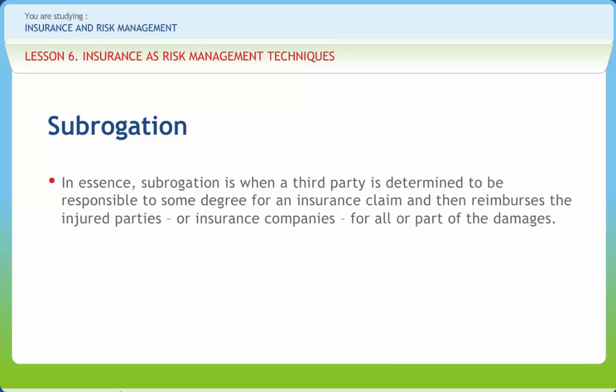In a sense, subrogation is when a third party is determined to be responsible to some degree for an insurance claim and then reimburses the injured parties or insurance companies for all or part of the damages. In many areas of insurance, the degree of specialization needed to pursue subrogation can vary by situation and circumstances. There are some cardinal rules that all can observe, including a deliberate and timely review of every claim for subrogation potential.